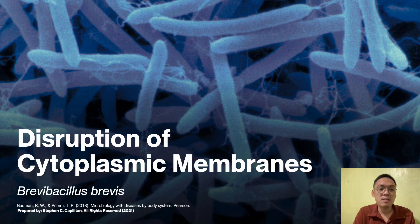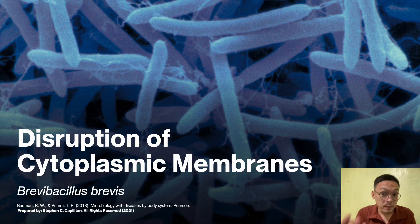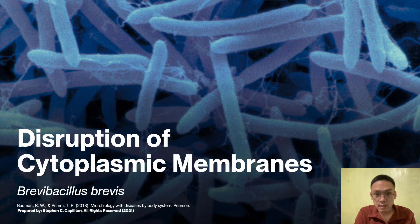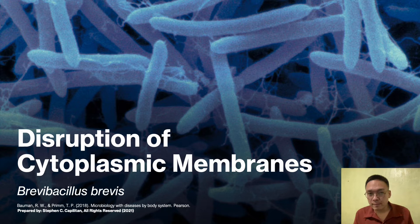The next mechanism is disruption of the cytoplasmic membrane. Brevibacillus brevis is a soil bacterium that produces the ionophoric antibiotic gramicidin D. Gramicidin D is a linear peptide with 15 amino acids and two isoforms. In the learning outcome for this section, we will describe the action of antimicrobial drugs that interfere with cytoplasmic membranes.